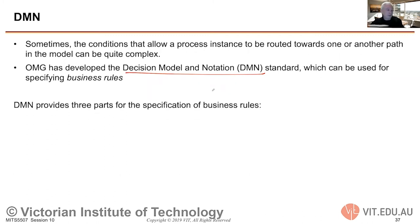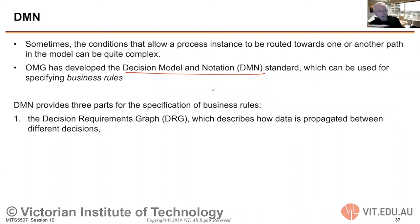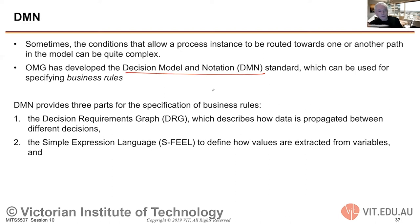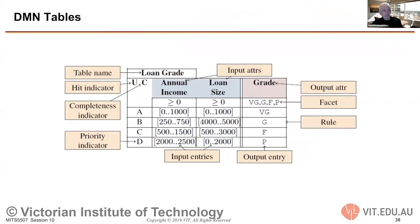DMN — Decision Model and Notation — has three parts for the specification of a business rule. It has a Decision Requirements Graph, called a DRG, which describes how data is propagated between different decisions. It has a Simple Expression Language called S-FEEL, which defines how values are extracted from variables. And it has Decision Tables — DMN tables. So three components: Decision Requirements Graph, Simple Expression Language, and Decision Model and Notation tables.